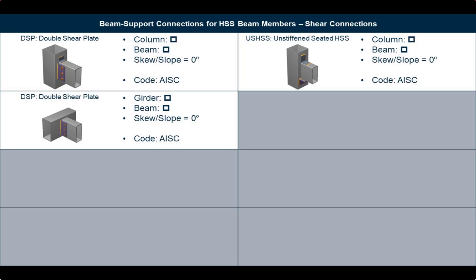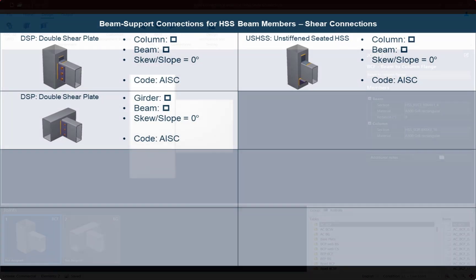Welcome. Hollow structural sections are increasingly favored as beam members in contemporary construction, necessitating reliable connections to transfer shear forces from HSS beams to HSS supports. In RAM Connection 2024, two new shear connections are now available to support joints with HSS beam sections.